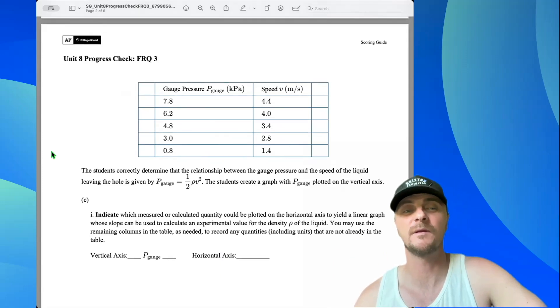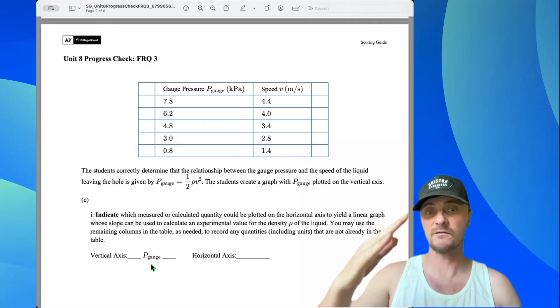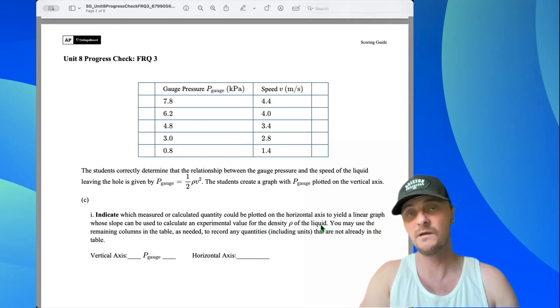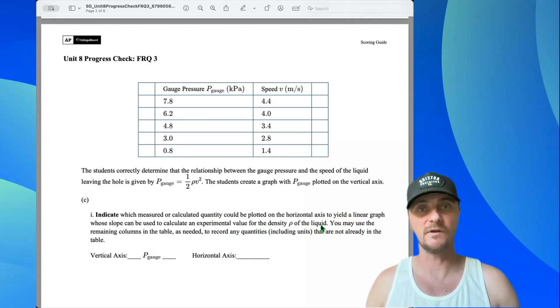Here's the table below, we have a bunch of pressures which resulted from different heights of this unknown liquid in the container. As a result of different heights of liquid, we get different exit velocities from the hole. The students correctly determine that the relationship between the gauge pressure and the speed of the liquid leaving the hole is given by P gauge equals one half rho v squared. The students create a graph with P gauge plotted on the vertical axis.